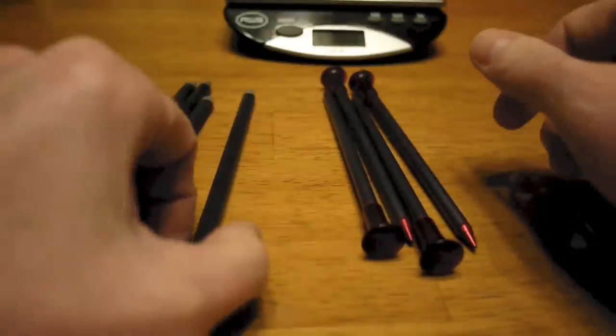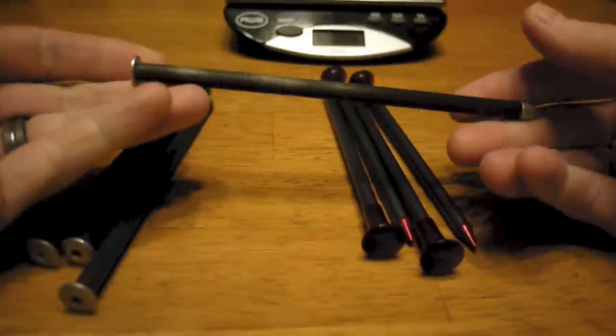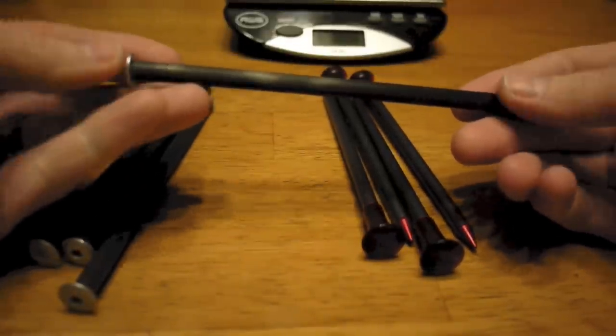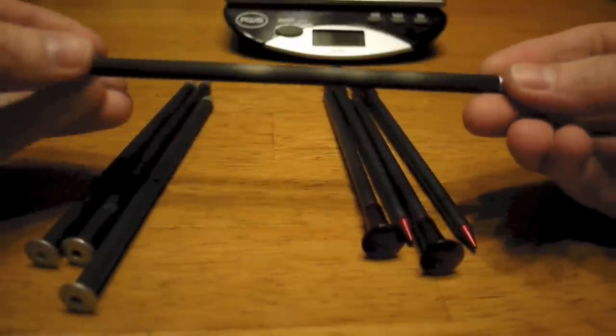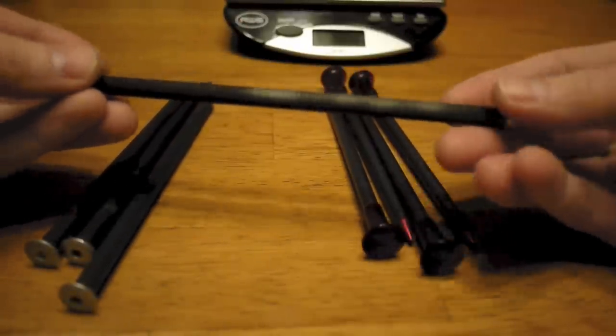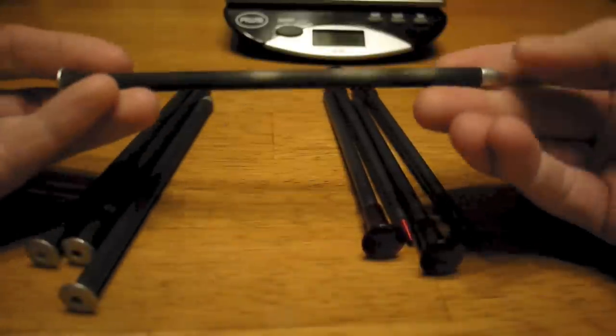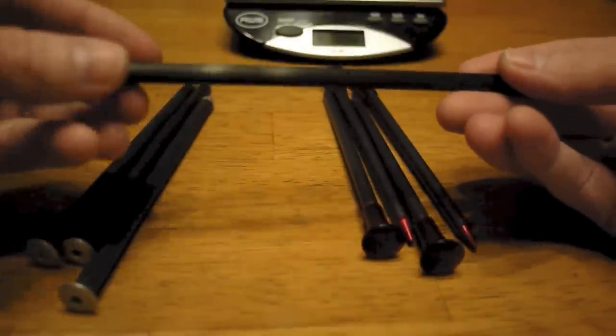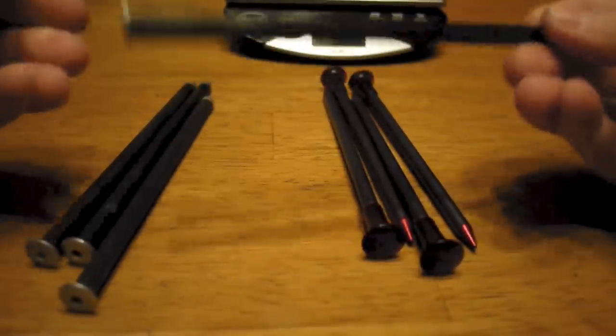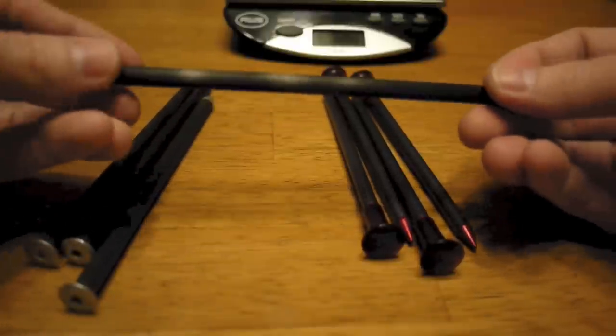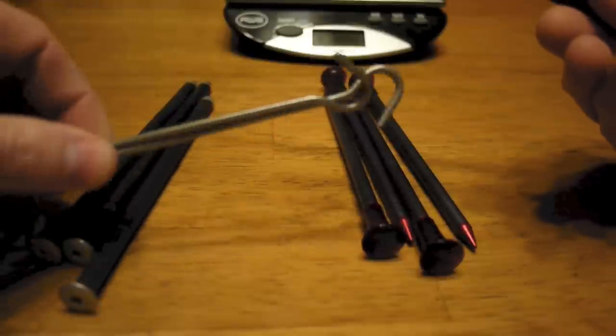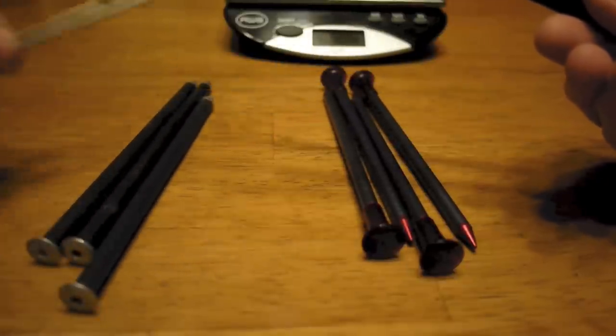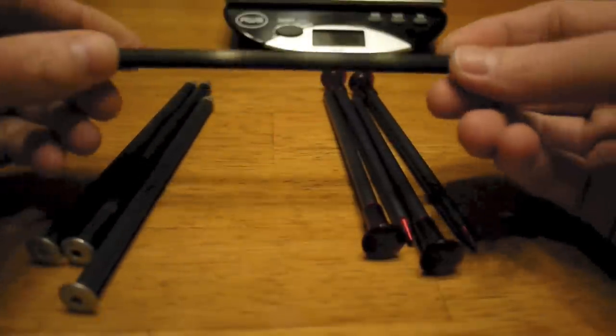But the other stakes I wanted to compare them to are these Ruta Locura stakes, he calls them Sorex stakes. These have a carbon fiber shaft in the middle, and they've got an aluminum head and an aluminum tip on it. I've actually been using these for the last few months on all of my backpacking trips. I'll carry two of these to use on my ridgeline tie outs, and then for my other ones I'll just use some titanium shepherd hook skewer stakes. And that's been working real well.